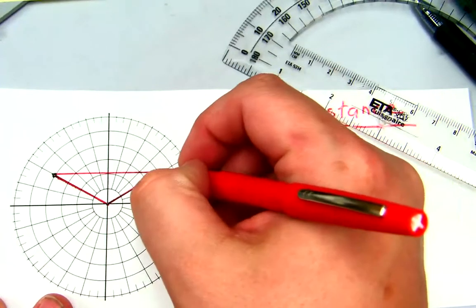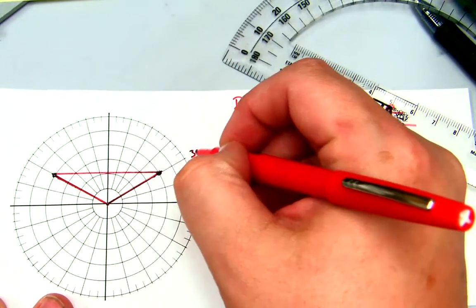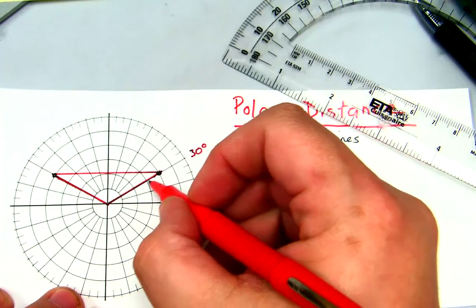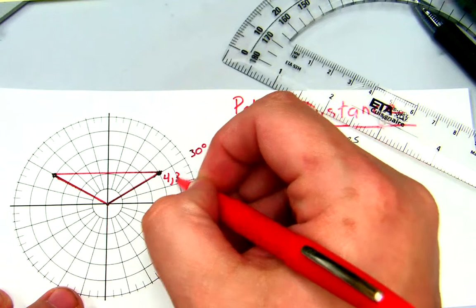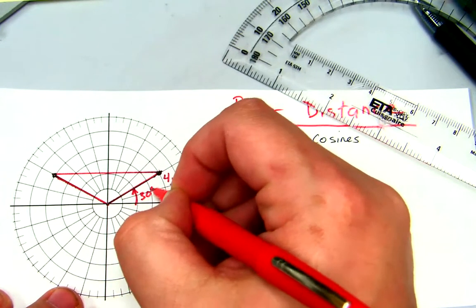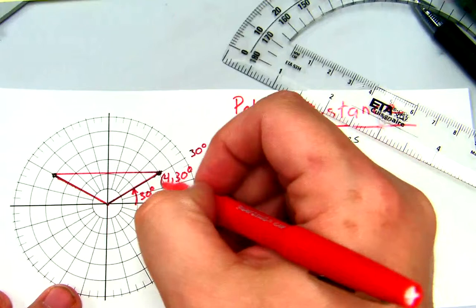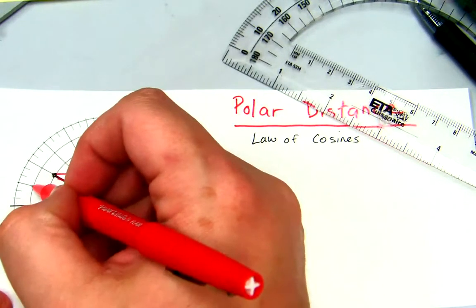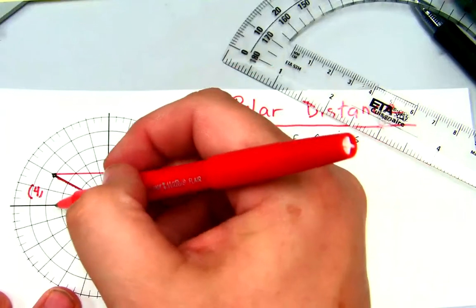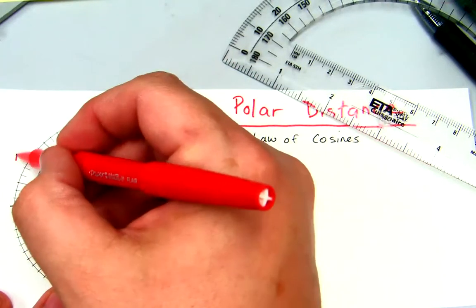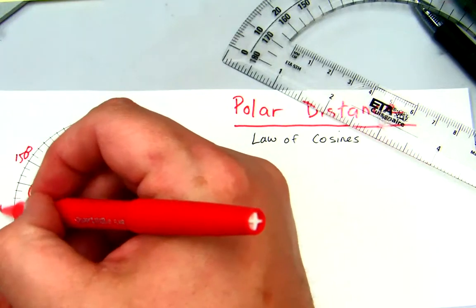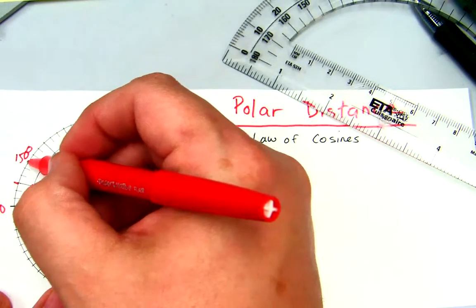This point is at 4 and 30 degrees. So I know that's 30 degrees. This one would be 180, so that's 150 degrees, because I know that's 180, so that's 150 and that's 30.